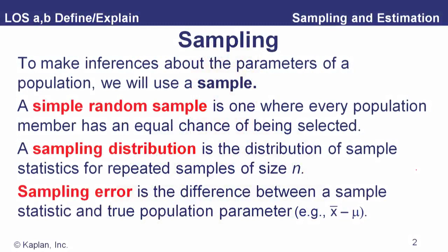When we talk about a simple random sample, the random part means that every population member, every outcome, has an equal chance of being selected in the sample.